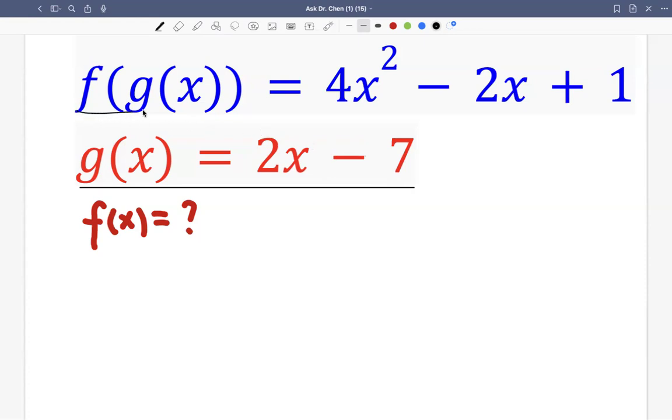Then f to the g are the quadratic function. So we want to recover f of x. So let's rewrite f composed with g. g is defined as 2x minus 7, so that's 2x minus 7.